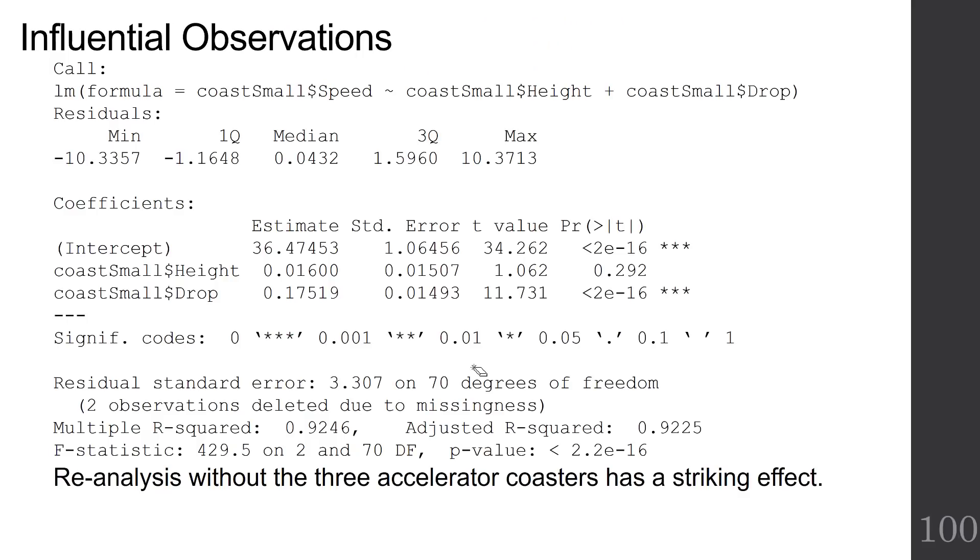So what do we do? First, let's reanalyze without the three accelerator roller coasters. I've called my new data set coast small in R, and I regress speed on height and drop again. But the smaller data set is excluding the three accelerator roller coasters. Notice the striking effect that it has. Now drop is significant, but height is no longer significant in the model. It's got a high p-value of 0.292.